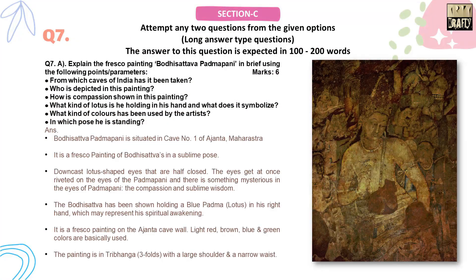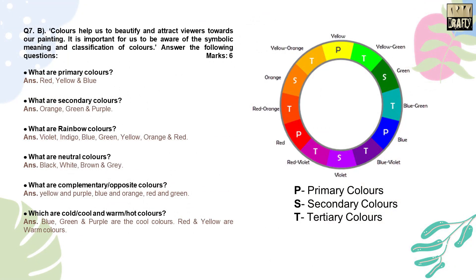Section C contains long answer type questions and you have to write the answer in 100 to 200 words, each carrying 6 marks. Question 7A contains several questions on the fresco painting Bodhisattva Padma Pani. Question 7B also contains several questions on different types of colors.